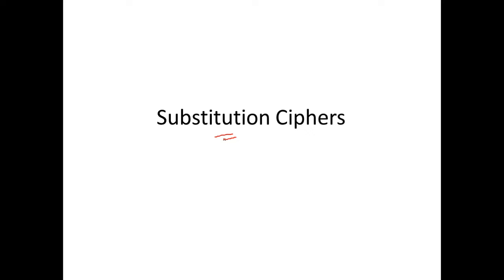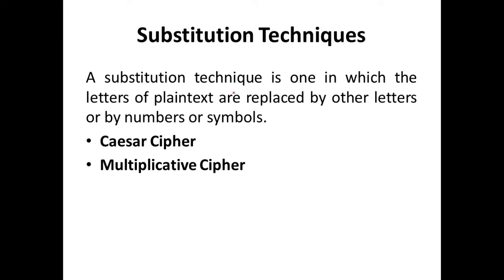In this session we'll be looking at substitution ciphers. Substitution ciphers are a technique wherein we take the plain text — say the message is 'satish' — and substitute each character with another symbol. For instance, I can encrypt S as G, something like that. Every character in the plain text will be replaced by another character, or a group of characters can be replaced by another group of characters or symbols.